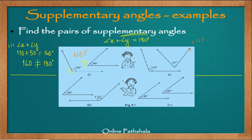For the second example, we again try angle X plus angle Y. Here X is 105 degrees and Y is 65 degrees. So 105 plus 65 gives us 170. Since 170 degrees is not equal to 180 degrees, the sum of these two angles — 105 and 65 — does not equal 180 degrees, so these two angles are not supplementary angles.